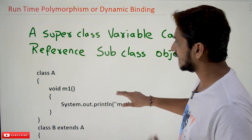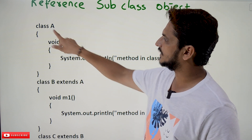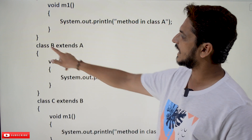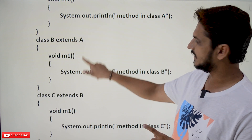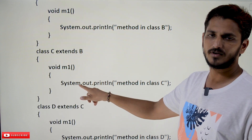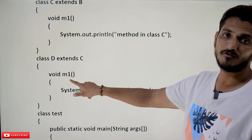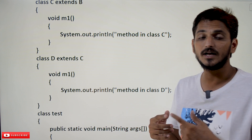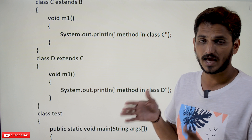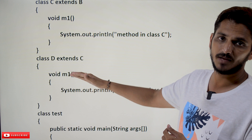Let's understand this concept better. Class A has an M1 method. Class B extends A and also has an M1 method. Class C extends B and also has an M1 method. Class D extends C and also has an M1 method. This is the concept of method overriding.